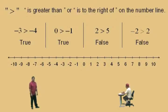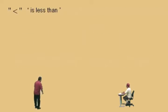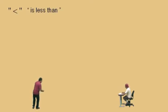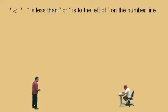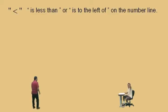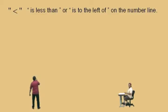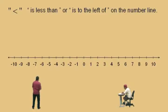Now let's go to less than. Here's our next symbol, Charlie, right there. That symbol represents the word statement 'is less than.' Now, on a number line, Charlie, what does that mean — to be less than? To the left? That's right. To the left of. Now let's bring out a number line and let's try this problem.